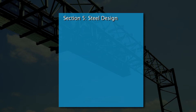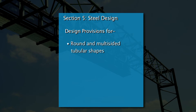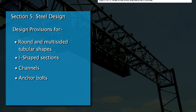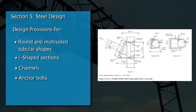Section 5, titled Steel Design, specifies design provisions for structural supports made of steel, including round and multi-sided tubular shapes, I-shaped sections, channels, and anchor bolts. This section has also been expanded to include design guidelines for fatigue-critical multi-sided tubular sections, longitudinal seam welds, tube-to-transverse plate connection welds, anchor bolt installations, and stiffened connections.